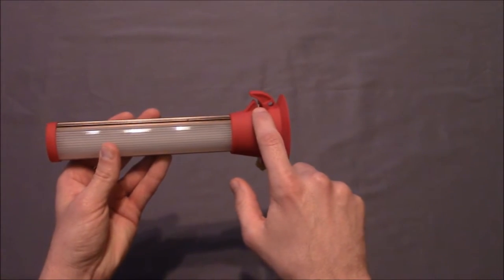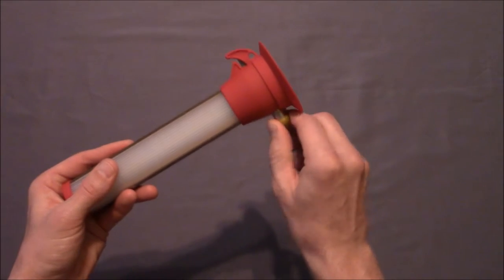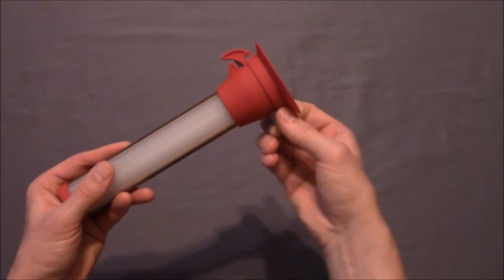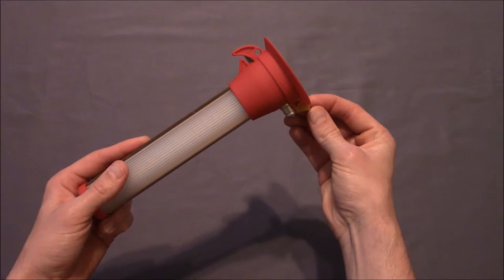On the side you have your seat belt cutter and your hammer as a glass break. This does have a removable safety piece that protects you from hurting yourself or from the sharp point coming in contact with your skin.